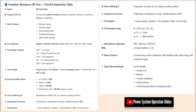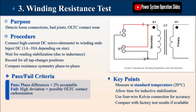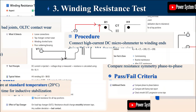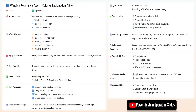Test 2: Insulation Resistance (IR/Megger) Test. The Insulation Resistance (IR) test, commonly known as the Megger Test, evaluates the condition of insulation between HV, LV, and earth components of the transformer. This test is crucial for identifying moisture contamination or insulation deterioration that could lead to premature failure. Before testing, the transformer must be isolated and discharged, with neutral grounding links disconnected.